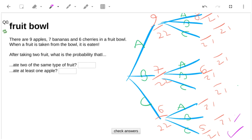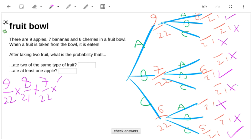Which ones do I want from this tree? Well, I want that one - cherry cherry, banana banana, and apple apple. So what I end up with is 9/22 times 8/21 plus 7/22 times 6/21 plus 6/22 times 5/21, and that gives me 0.312.